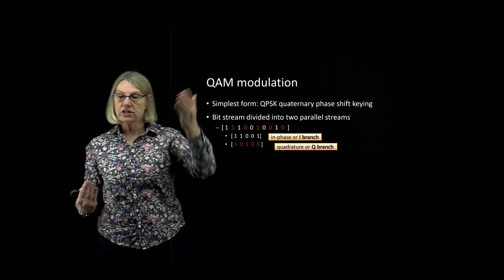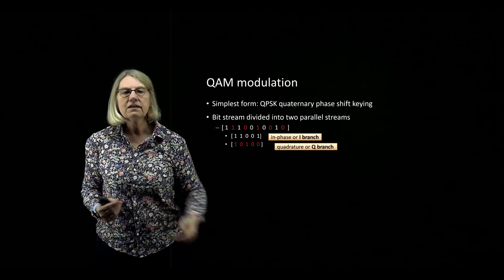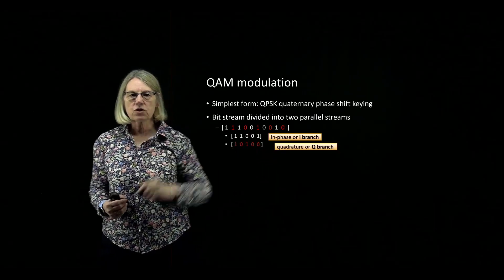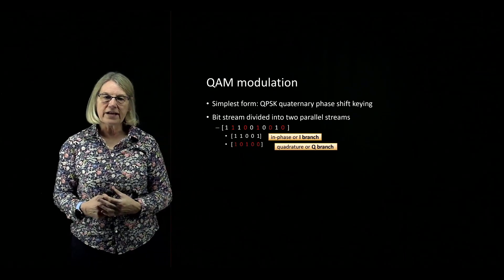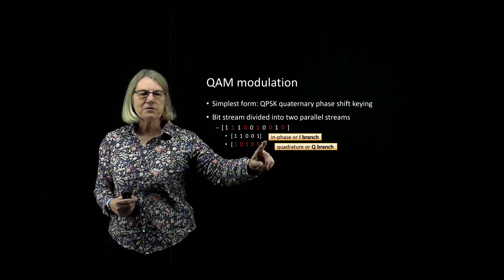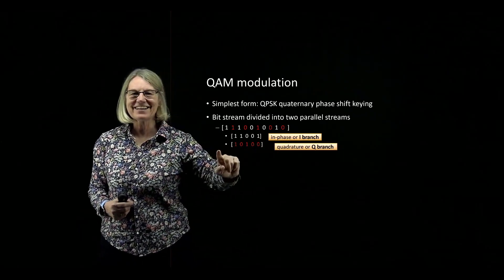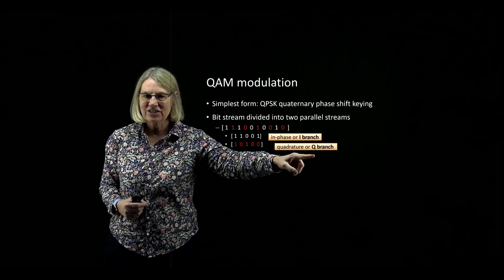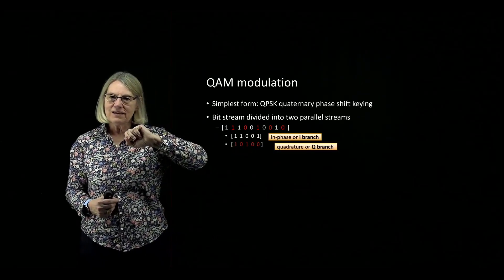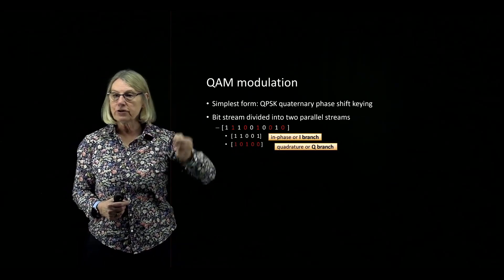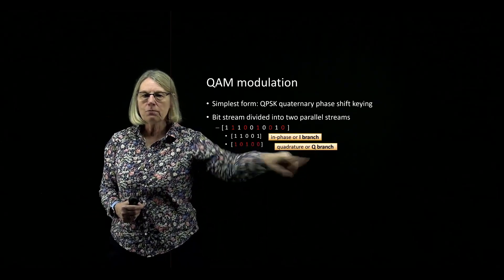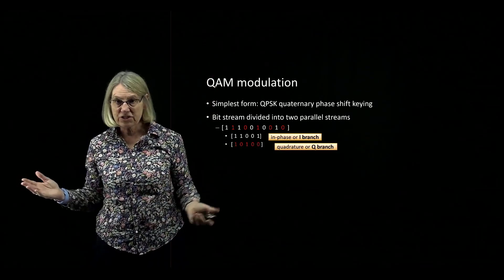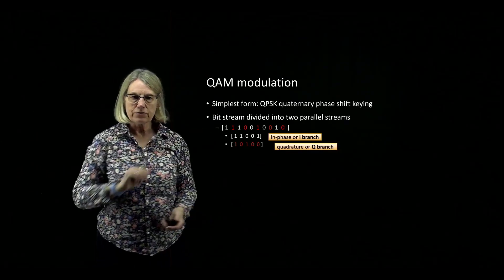In QAM modulation, we give a name to this. When we deinterleave, we call this the in-phase or I branch, and the second one is the quadrature or Q branch. We'll also see this referred to as IQ modulation or QAM modulation — two-dimensional, in-phase and quadrature.